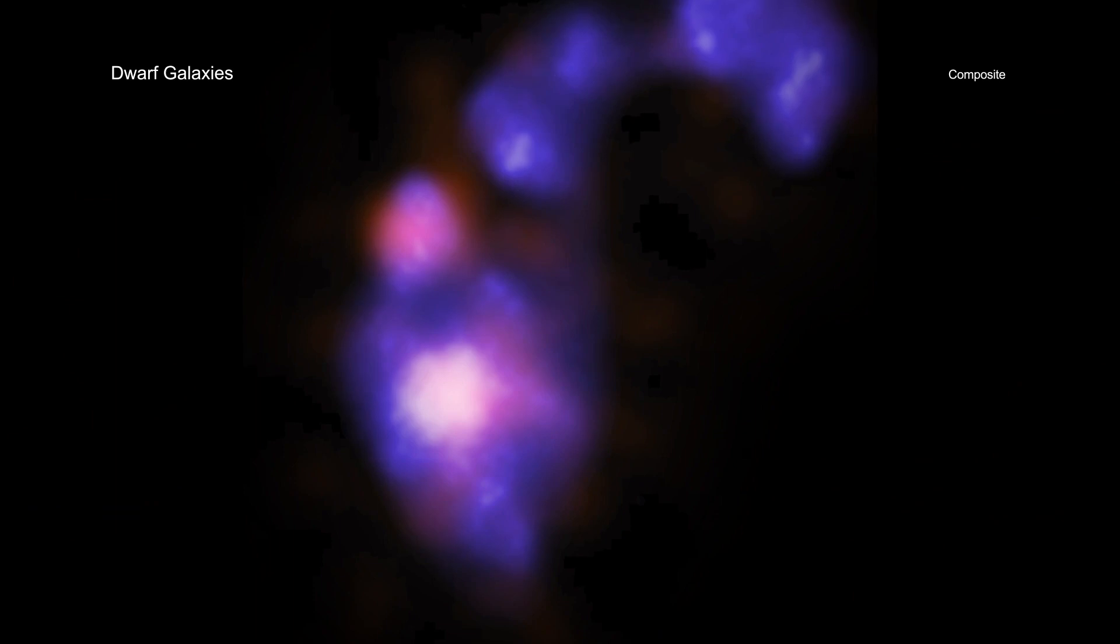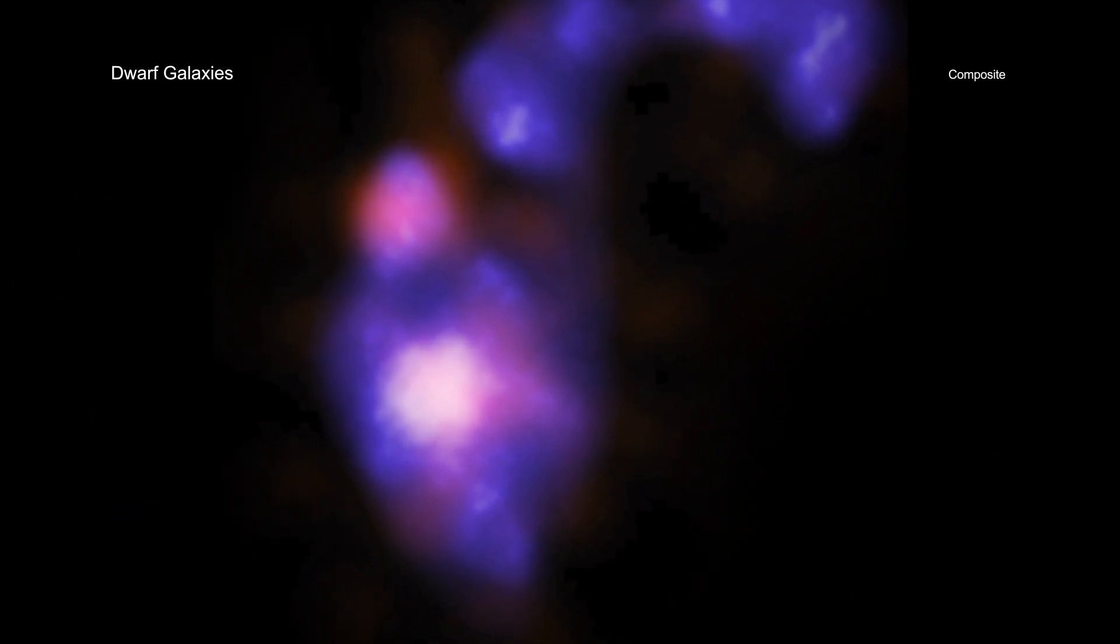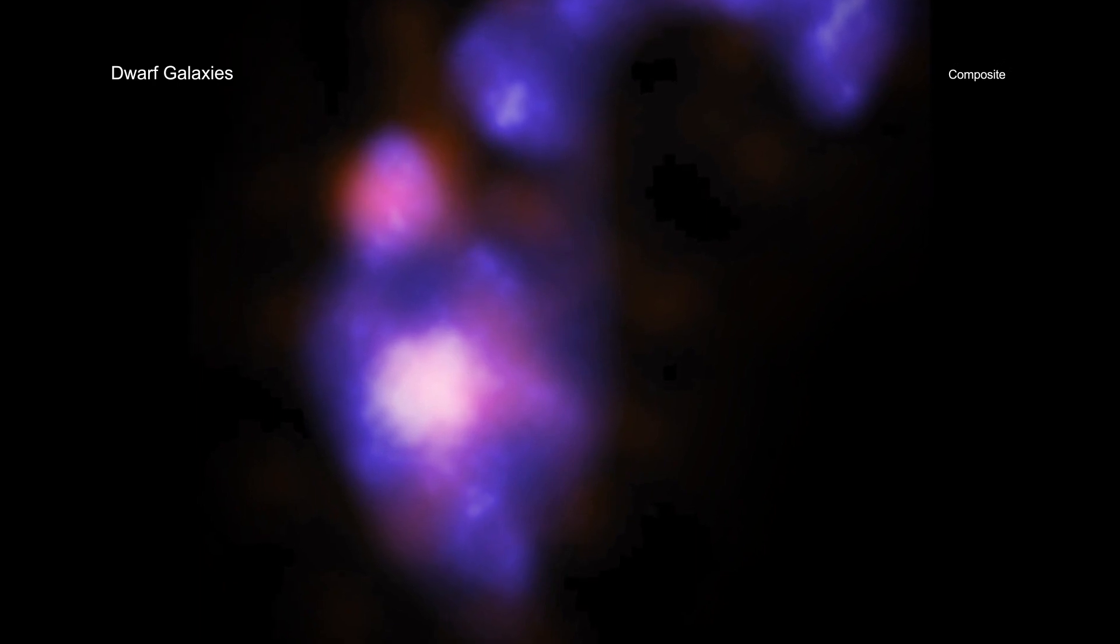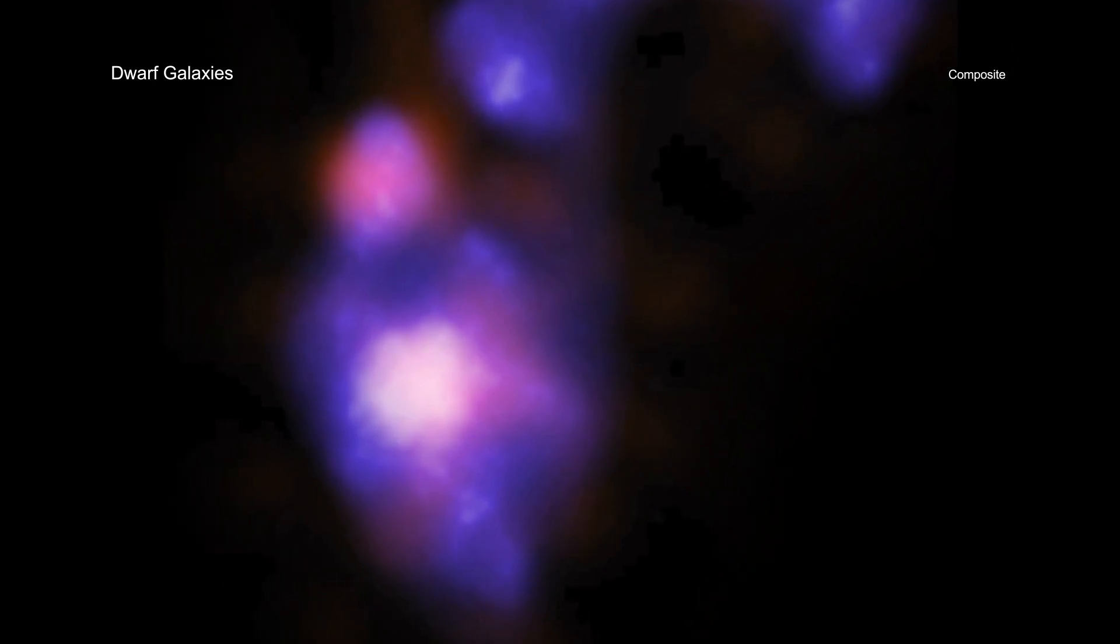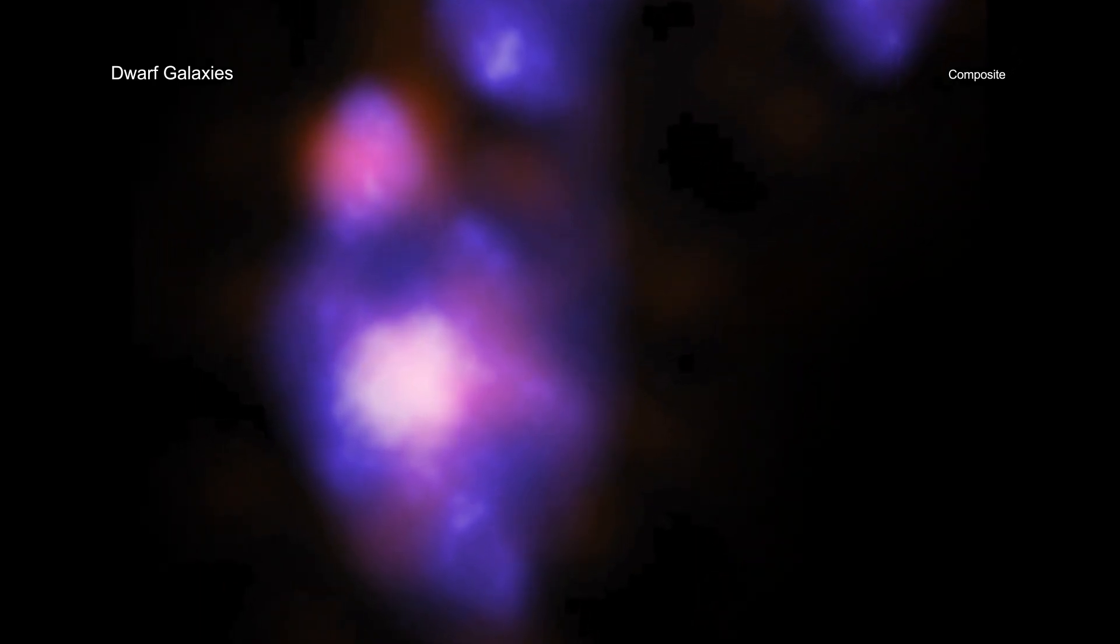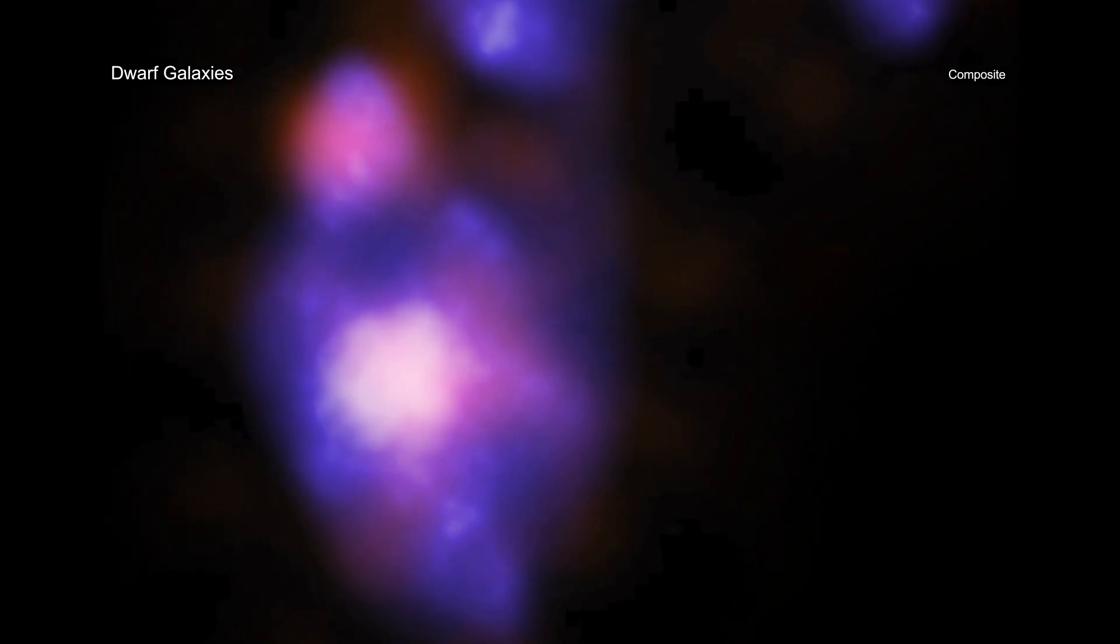Scientists think the universe was awash with small galaxies known as dwarf galaxies several hundred million years after the Big Bang. Most merged with others in the crowded smaller volume of the early universe, setting in motion the building of larger and larger galaxies now seen around the local universe.